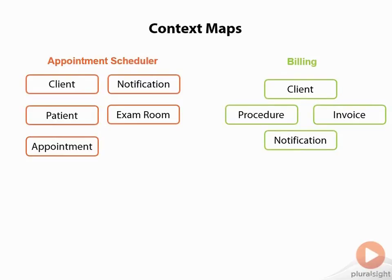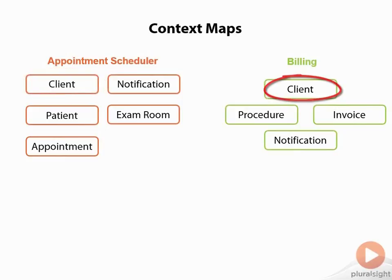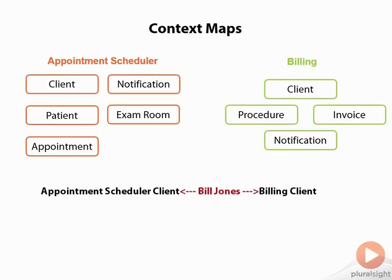If we look at these two sets of concepts, we can see some obvious overlap. For one thing, client appears in both contexts, but we know that for appointment scheduling, we really only care about the client's name. Whereas in the billing system, they'll want additional information like address and payment details. However, although the details involved vary, we know that Mr. Jones, the client on the left, is the same actual person as Mr. Jones, the client on the right.